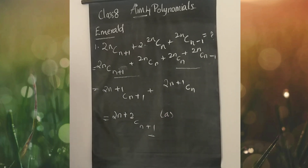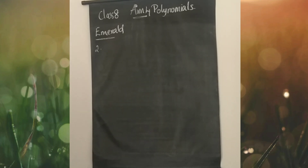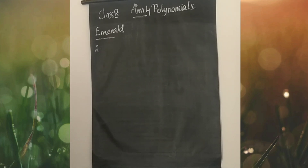Now let's look at the second question. The second question is a little different actually — you don't get the values cut out. If A and B are respective coefficients of x^m and x^n in the expansion of (1+x)^(m+n), then what is the equation we are going to get? Let's solve that.